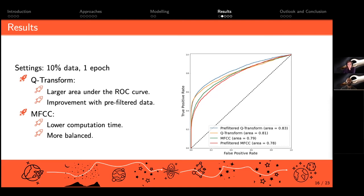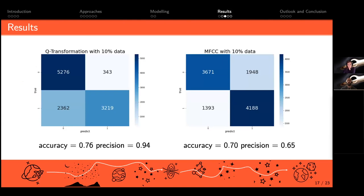This picture is also mirrored in our confusion matrices. On the left hand side you can see the Q-transformation. It had the higher accuracy, and also, which is really good for our stakeholder, we reached a really high precision. So if this model found a black hole, you can be 94 percent sure that it really is a black hole.